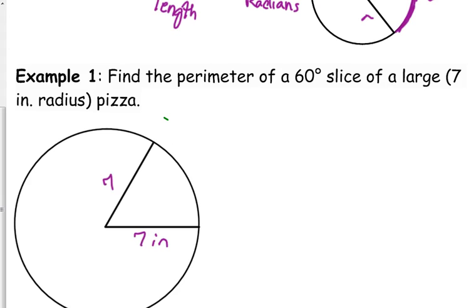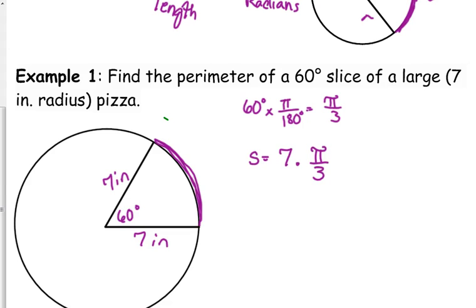These are both 7 inches. Alright, we've got to find the length of the crust though. Okay, that's where the arc length comes into play. It's a 60 degree slice of pizza, but we've got to do a little work. We've got to convert our degrees to radians. So that's pi over 3 radians. So our arc here is the radius 7 times pi over 3.